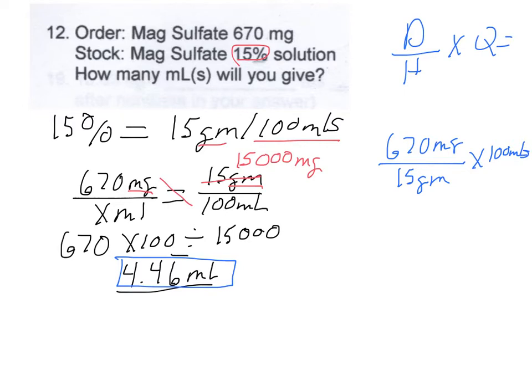Same thing, we need to convert one of these because your units of measurement have to be the same. So I'm going to convert the 15 grams over into 15,000 milligrams, just like I did in the first problem.